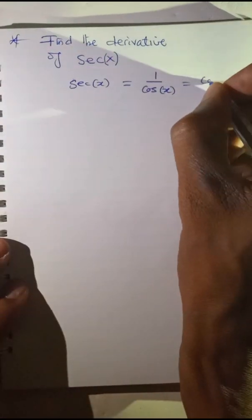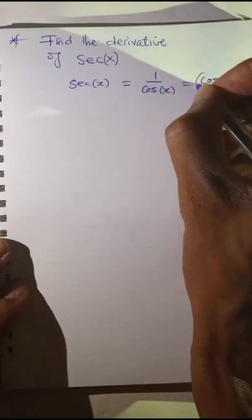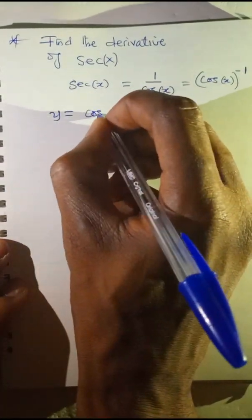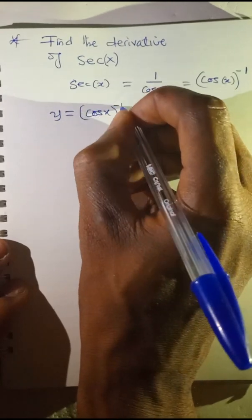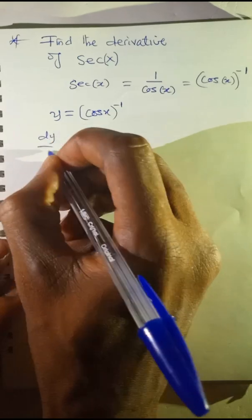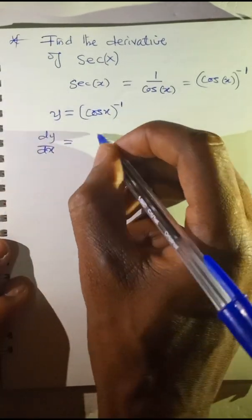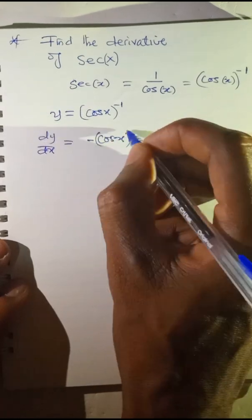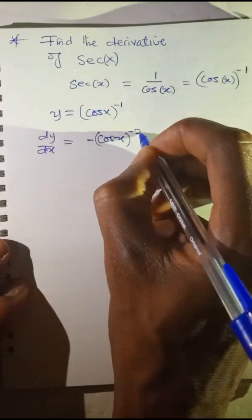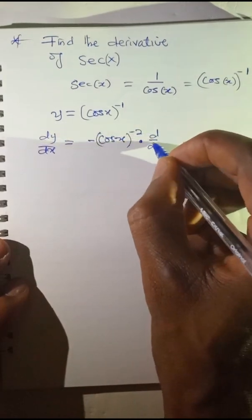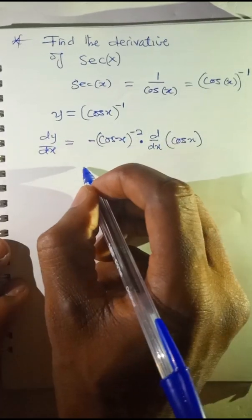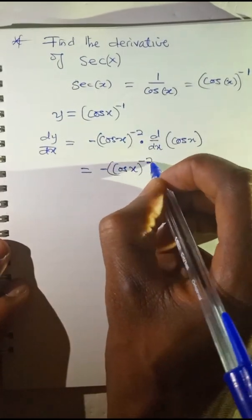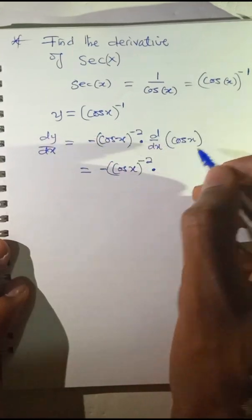sec x can be written as cos x raised to the power of negative 1. So let y equal cos x raised to the power of negative 1. Then dy/dx equals: drop down the exponent negative 1, multiply by cos x raised to the power of negative 1 minus 1, which is negative 2, times the derivative of the function under the bracket, which is cos x.